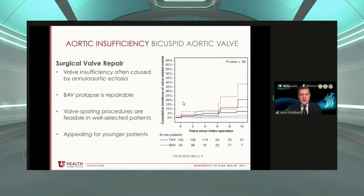Valve repair is certainly appealing for younger patients, and this is all part of the conversation. This highlights the complexity of bicuspid aortic valve disease. At our center we've really appreciated the heart team concept — a multidisciplinary approach to these patients is absolutely critical, because each one is an individual. The heterogeneity of the clinical syndrome makes decision-making very complex and must be personalized for each patient.